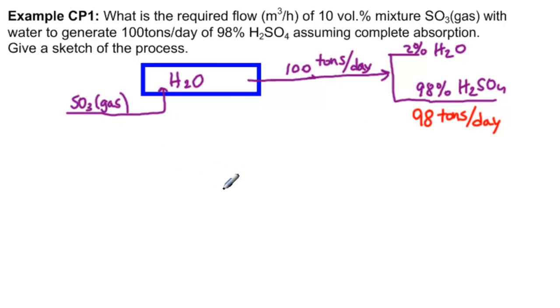How would we do that? We need the stoichiometric equation, which is SO3 plus H2O goes to H2SO4, and that's balanced 1, 1, and 1. So now we need the molar masses.